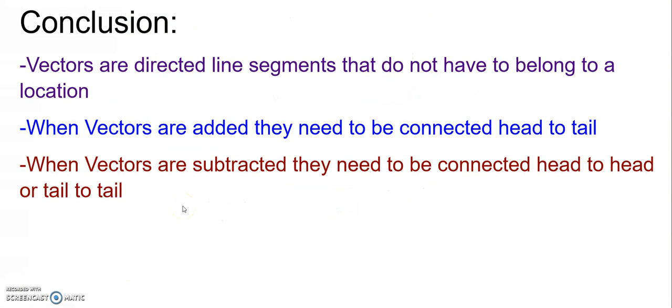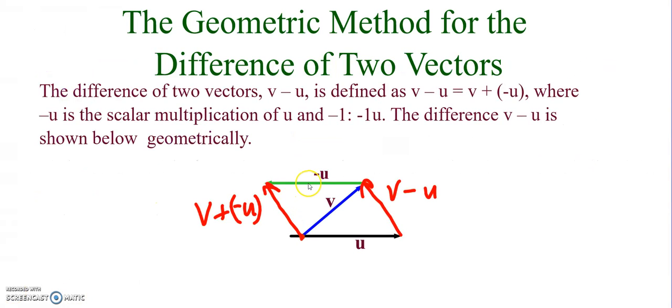So again, vectors are directed line segments. We saw on this previous example a great demonstration of the fact that I can just shift this vector around as long as I don't change the magnitude or direction of it. I can move it where I want conveniently to demonstrate geometrically the addition or subtraction that I need.